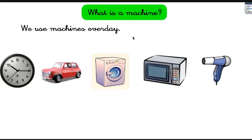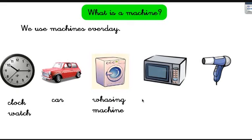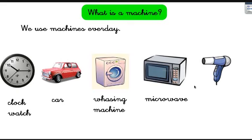Do you know many machines? We use machines every day, like a clock or watch. Maybe you come to school by car or by bus — well, those are machines too. And the famous washing machine — what would we do without it? Washing by hand is painful. And look at this microwave — we can heat up food in seconds. And the last one: a hair dryer. Without a hair dryer you have to spend time drying your hair with a towel, but with a hair dryer, in minutes everything is done. Everything is easier with machines.